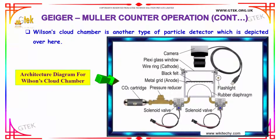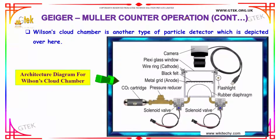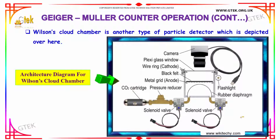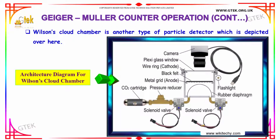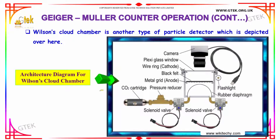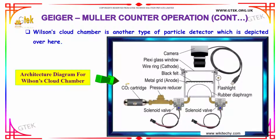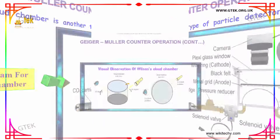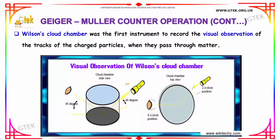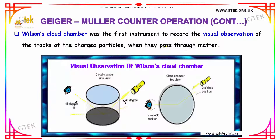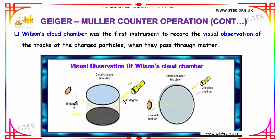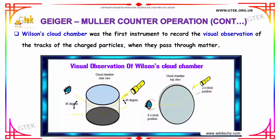Wilson's cloud chamber is another type of particle detector, depicted here. Wilson's cloud chamber was the first instrument to record the visual observation of the tracks of charged particles when they pass through matter.